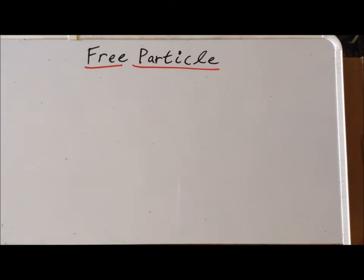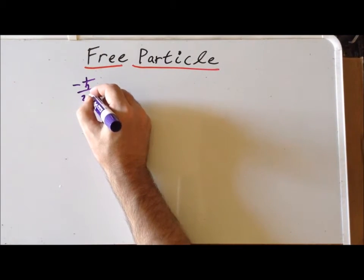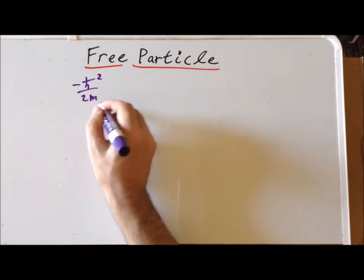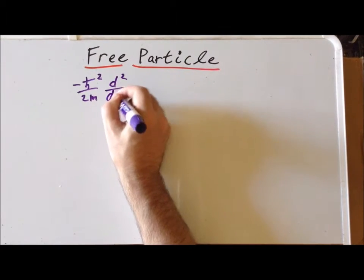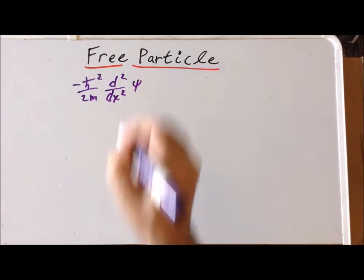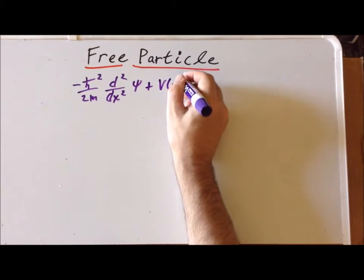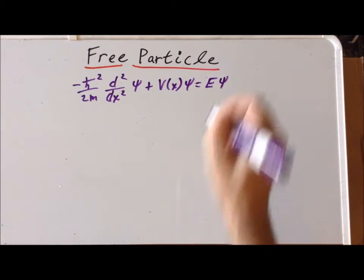In this video, we are going to discuss the free particle in quantum mechanics. Recall that for any system, we can describe it using the Schrödinger equation, which in one dimension is going to be minus h-bar squared over 2m times the second derivative with respect to x of the wave function, plus some potential, and this is going to be equal to the energy of the system times the wave function.